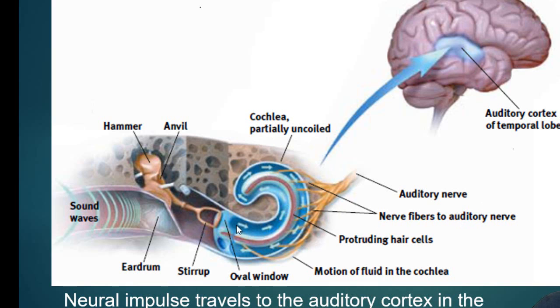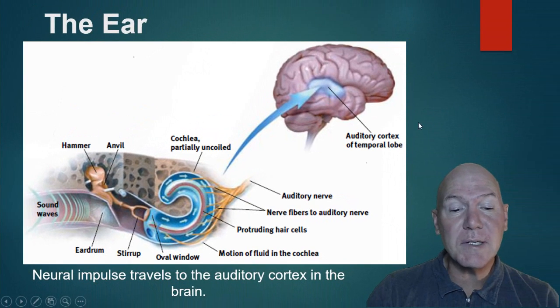The oval window is where the stirrup connects, and the motion of the fluid travels around the cochlea. The codes then sent to your brain into your auditory cortex dictate the kind of sound you hear.